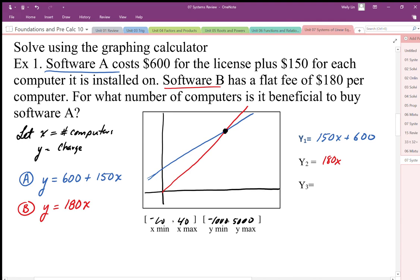From the graph—we could solve this algebraically, but from the graph—the intersection point is 20 computers and $3600. Once we hit 20 computers, Software A, which is the blue line, is going to be cheaper.